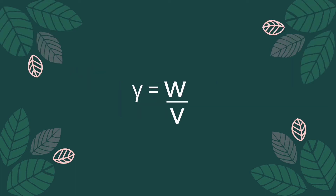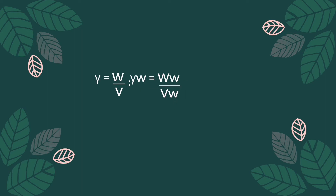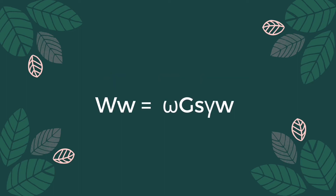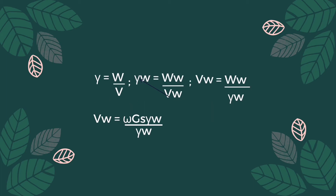Unit weight is equal to total weight divided by total volume. We can also express this in terms of water. Unit weight of water is equal to weight of water divided by the volume of water. Transposing, volume of water equals weight of water divided by unit weight of water. Weight of water is equal to moisture content times specific gravity times unit weight of water. Canceling unit weight of water from both sides gives us the value of volume of water.